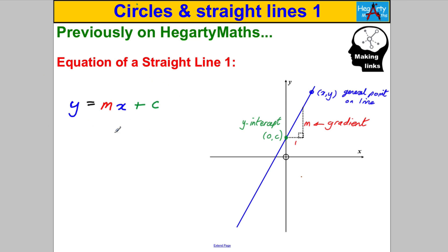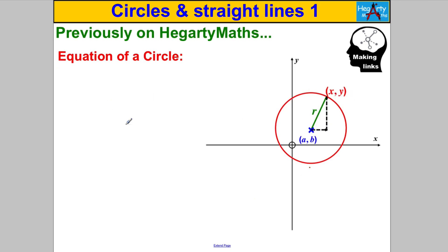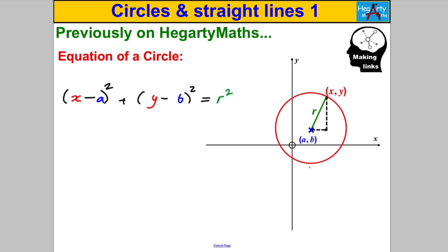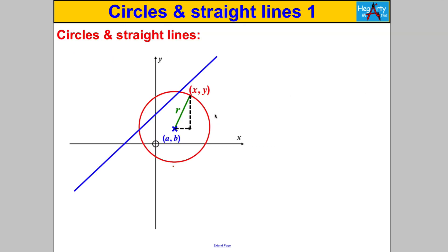Similarly, when you have a straight line not in that form, it's sometimes useful to convert it into this form. Also, do you remember the equation of a circle with centre (a, b) and radius R? Pause the video and state that. It looks like this: (x − a)² + (y − b)² = R², for a centre (a, b) and radius R. You have to be able to remember the equation of the circle too.